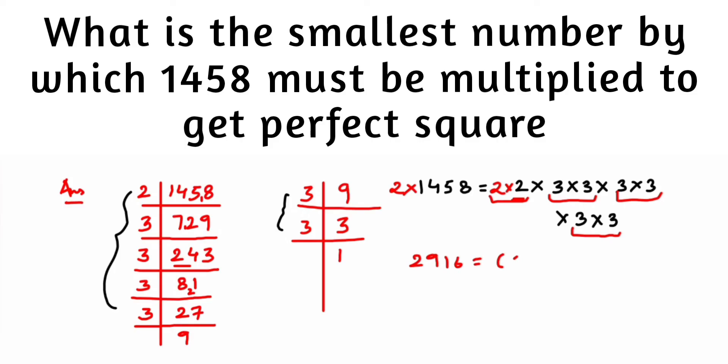This is equal to, I'll just rewrite this: 2 into 2, multiplied by 3 into 3 (I'm keeping in a bracket to show you that they are in a pair), multiplied by 3 multiplied by 3, into 3 multiplied by 3.